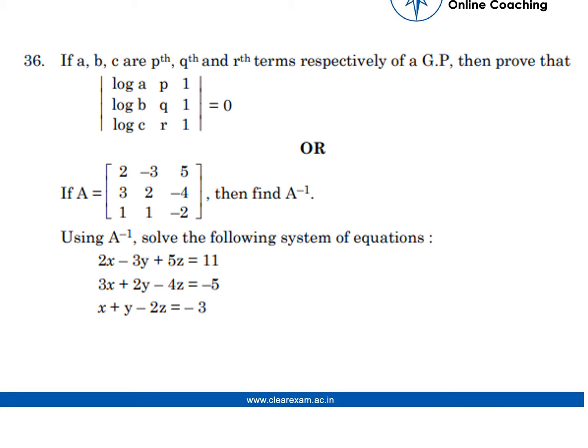The question is: if a, b, c are pth, qth and rth terms respectively of a GP, then prove that the given matrix is equal to 0.